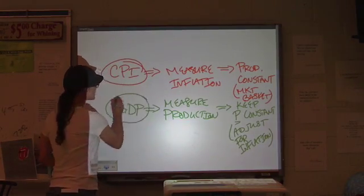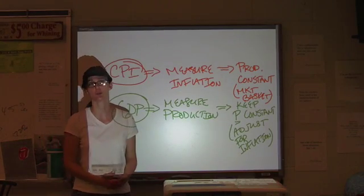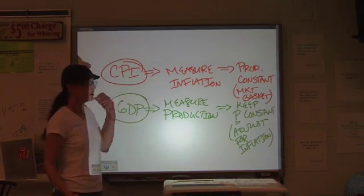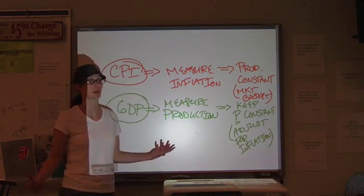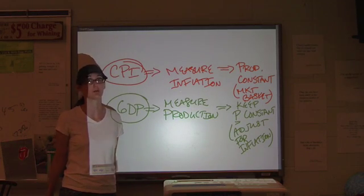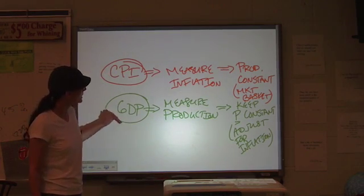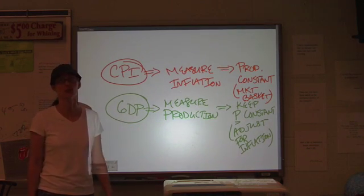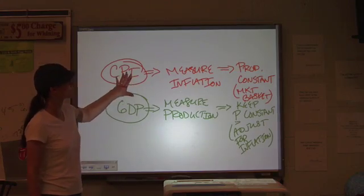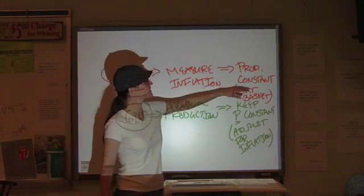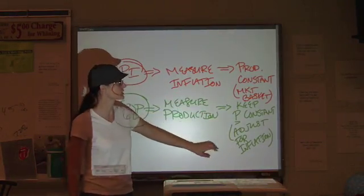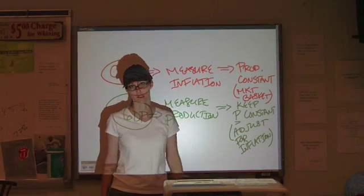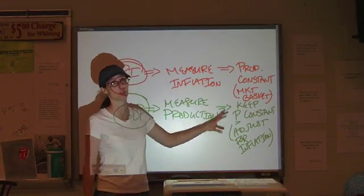For GDP, we want to know what's happening with the level of national production. Because if we have a drop in national production for something like high unemployment, which is running rampant today, then we want to take the prices out of the equation. So for CPI, you're measuring inflation, so you keep production constant. GDP, you're measuring production, so you want to keep prices constant. It's a big difference between those two things.